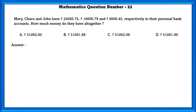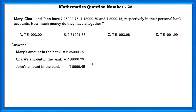Mathematics question number 22. Mary, Charu and John have Rs. 25,000.75, Rs. 18,000.79 and Rs. 8,000.45 respectively in their personal bank accounts. How much money do they have altogether? The money they have altogether is equal to the sum of all three amounts, that is Rs. 51,001.99.